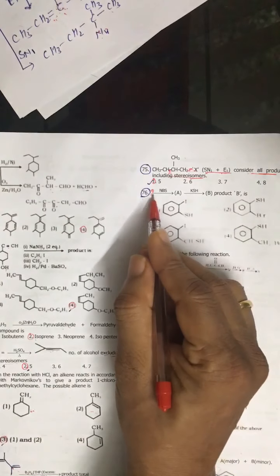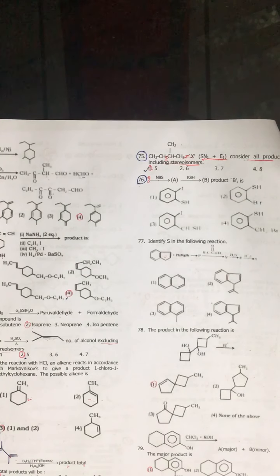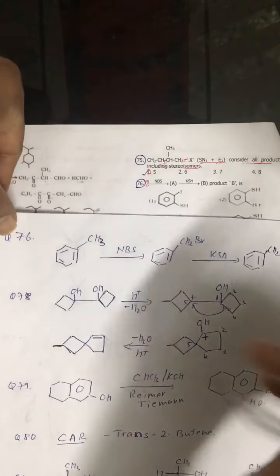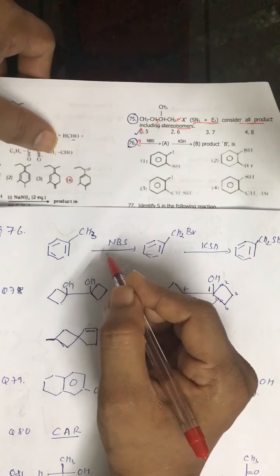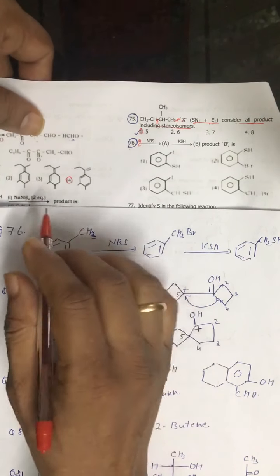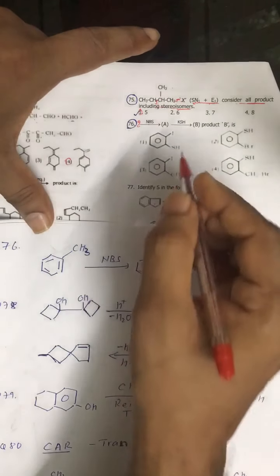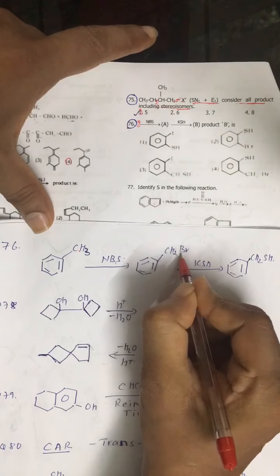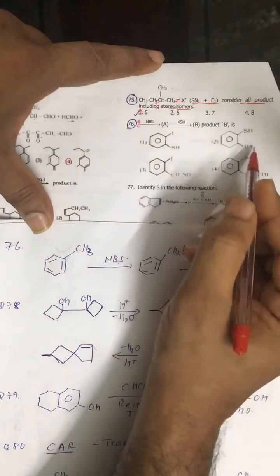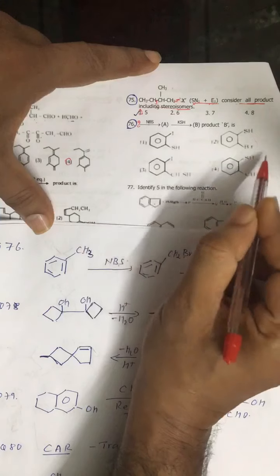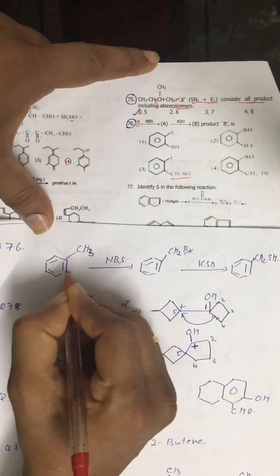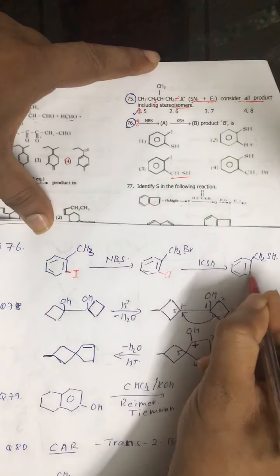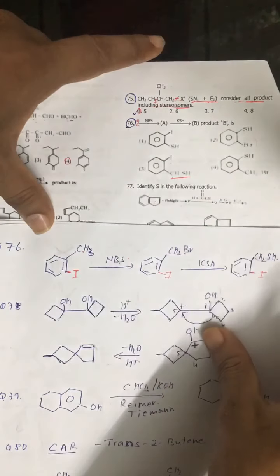Question number 76: again the reactant is not given. NBS is given, so I assumed the reactant. NBS — N-bromosuccinimide — shows allylic or benzylic bromination. That is why I took CH3. But the problem is from the product I am not able to guess. From this I started with NBS, then bromo, then KSH — nucleophilic substitution — so CH2SH. I tried to find this product from the options but I am not getting it. I am having only one CH2SH. From this I guess the reactant should have been this kind of thing. You can go for this option, otherwise you can cancel this question.